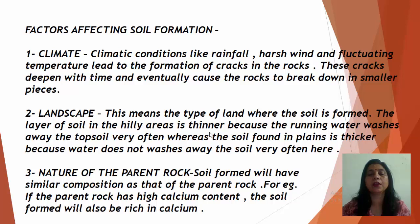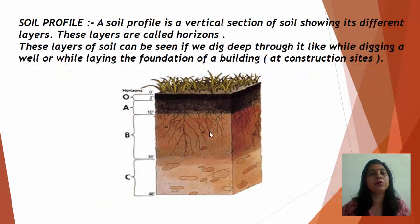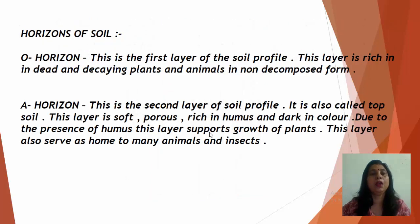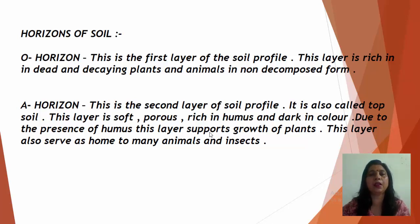Now, what is a soil profile? It is a vertical section of soil showing its different layers, and these layers are called horizons. These layers can be seen if we dig deep through the soil, such as while digging a well or laying the foundation of a building at a construction site. The first layer is the A0 horizon — this layer is rich in dead and decaying plants and animals in non-decomposed form.